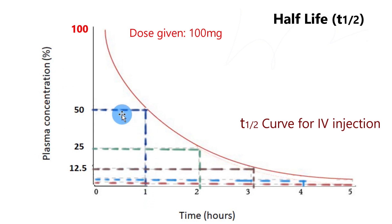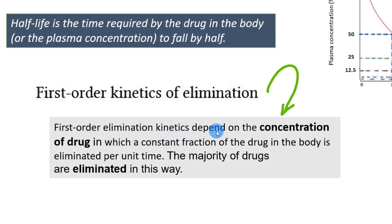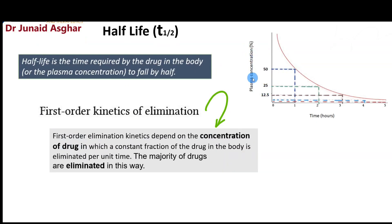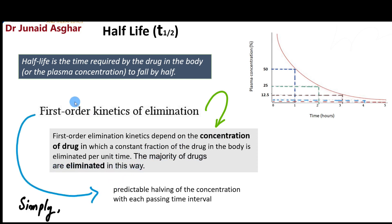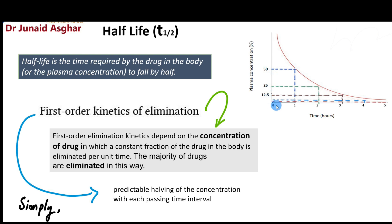During the first half-life period the body eliminated 50% of the drug, and in the second half-life period it eliminated 25%. This brings us to the concept of first-order elimination, which states that first-order elimination kinetics depend on the concentration of the drug — a constant fraction of the drug in the body is eliminated per unit time. The majority of drugs are eliminated this way. Simply put, first-order kinetics means predictable halving of the concentration with each passing time interval.